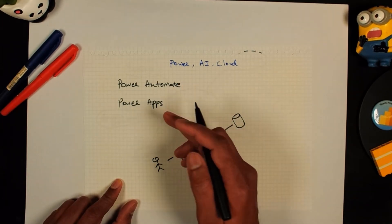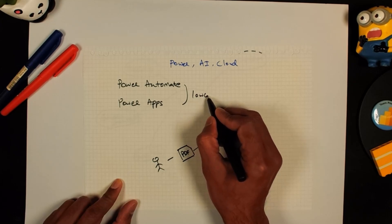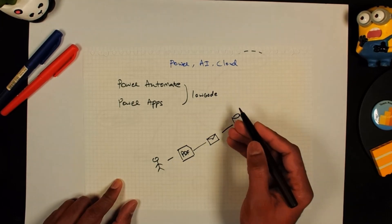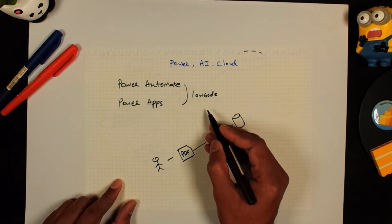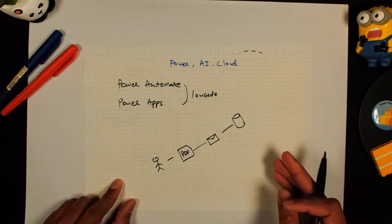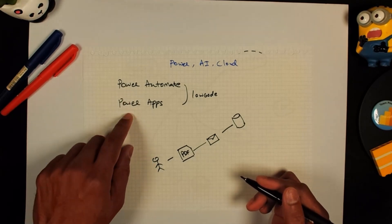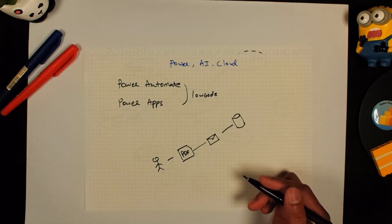Both of these Power Automate and Power Apps are what Microsoft calls as low code. That means you don't really do a lot of coding. There's a little bit of coding involved but essentially you're just dragging and dropping and arranging things to build forms or automations. So these are the two main ingredients of that Power Platform apart from Microsoft Power BI.